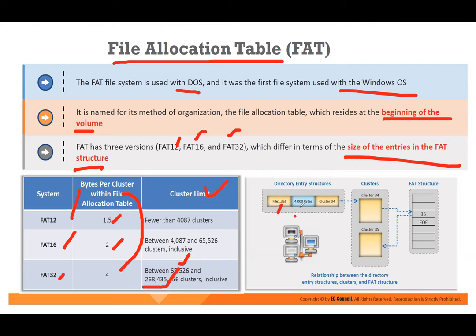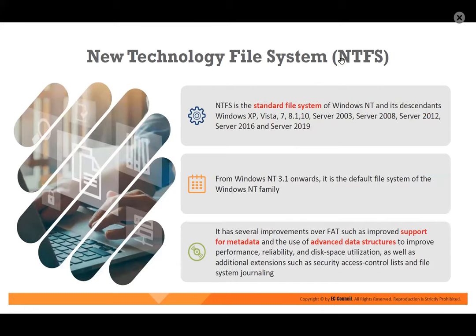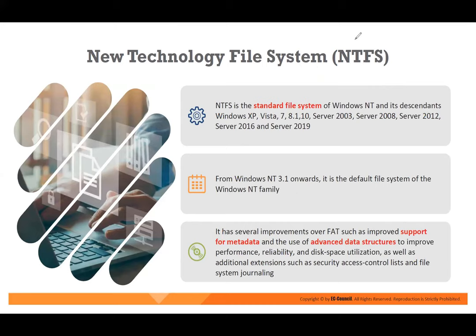In the directory structure of FAT32, you have file name, bytes, cluster 32, with clusters in combination — and the FAT section marks the end of file. Most systems now use NTFS — new technology file system — which is the standard file system in Windows NT and all servers. NTFS has several improvements over FAT, supporting metadata, advanced data structures to improve performance, reliability, and disk space utilization.